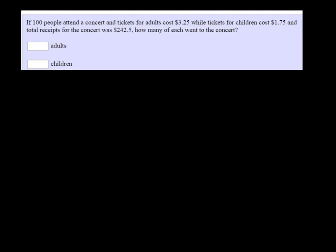We don't know how many adults and how many children there were, so let's say that there were X adults. And to find how many children there were, we could say there were Y children, and the total was 100.